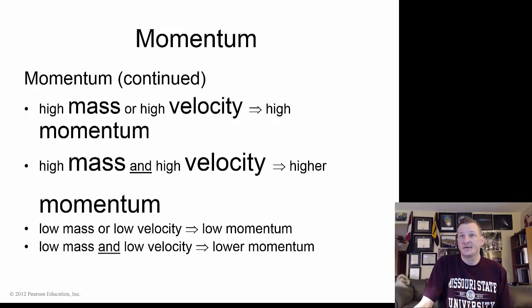In momentum, a high mass or a high velocity will equal high momentum, and a high mass and a high velocity will get a higher momentum. Or a low mass or a low velocity will have a low momentum. It's kind of like how much energy is involved in this motion.